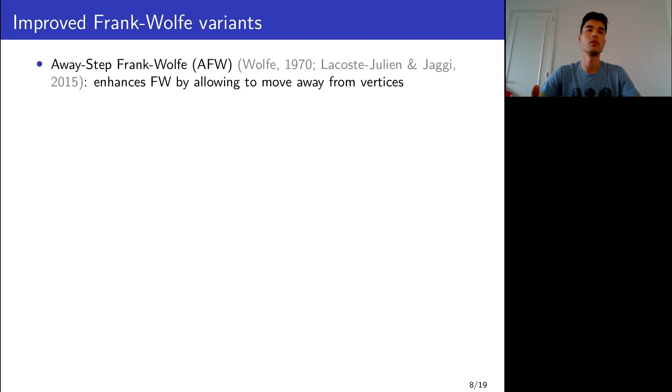There have been several variants proposed to improve Frank-Wolfe. Perhaps the most famous one is the Away-Step Frank-Wolfe algorithm, which breaks the zigzagging trajectory by allowing to move away from vertices. In this case, if you're at x₃, you move to x₄ by moving away from x₀. The only drawback is that to ensure feasibility of the new iterate when you move away from vertices, you need to store the decomposition of the iterates in memory. This can become expensive in memory usage, and therefore also in computation time.